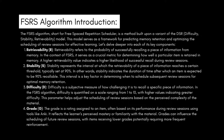The next component is stability. Stability represents the interval at which the retrievability of a piece of information reaches a certain threshold, typically set at 90 percent. In other words, stability indicates the duration of time after which an item is expected to be 90 percent recallable. This interval is a key factor in determining when to schedule subsequent review sessions for optimal memory retention.